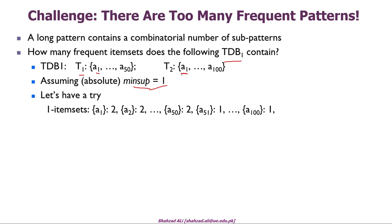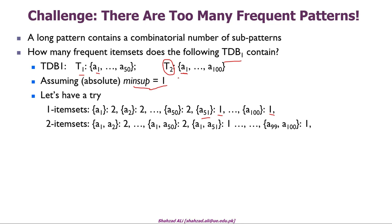Items A51 through A100 have support count 1 because they occur only in transaction T2. So some item sets have support 2 and some have support 1. Moving to frequent 2-item sets, all possible combinations from A1–A2, A1–A3, up to A99–A100 are considered. Some 2-item sets have support 2 (those involving only items from A1 to A50) and some have support 1.